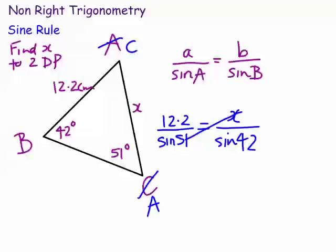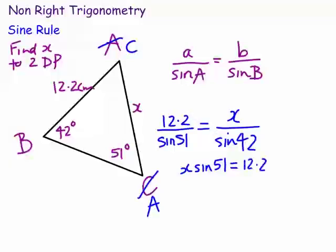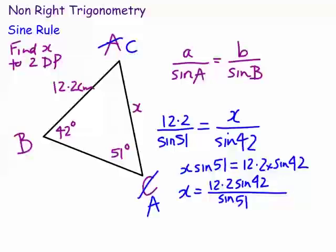And 12.2 over the sine of 51 degrees. We cross-multiply again to solve this: x times the sine of 51 is equal to 12.2 times the sine of 42. X sine 51 means x times sine 51. So we divide: x is equal to 12.2 sine of 42 degrees all over the sine of 51. We type that into the calculator and get 10.504. So x is equal to 10.50 centimetres to two decimal places.